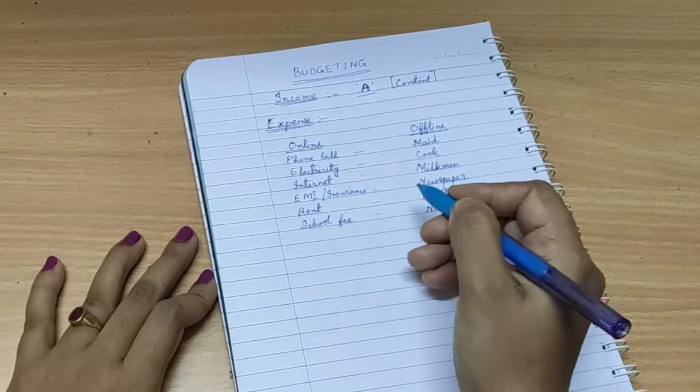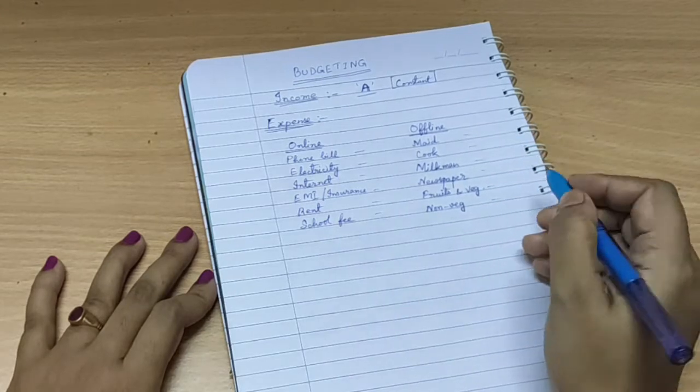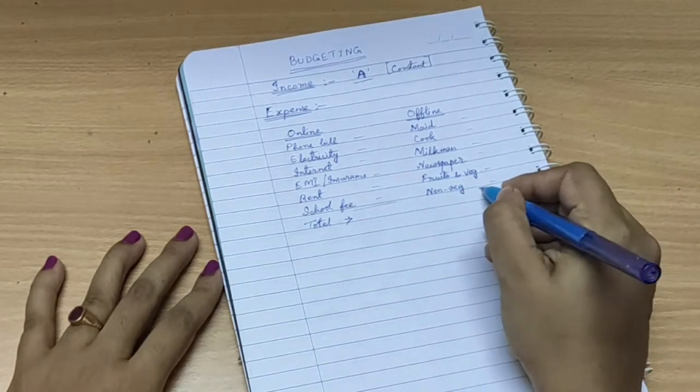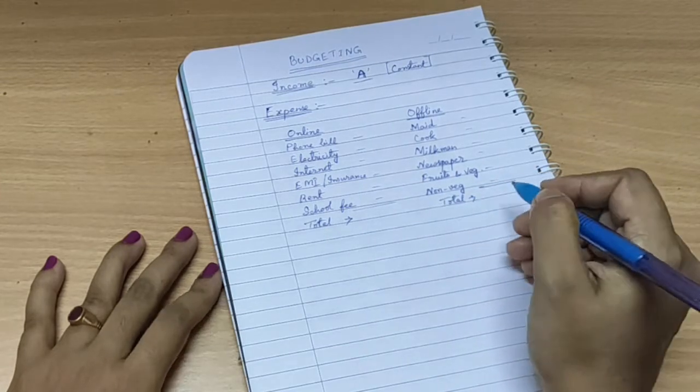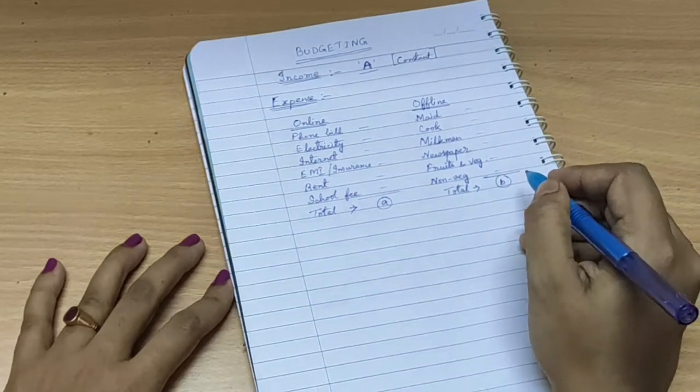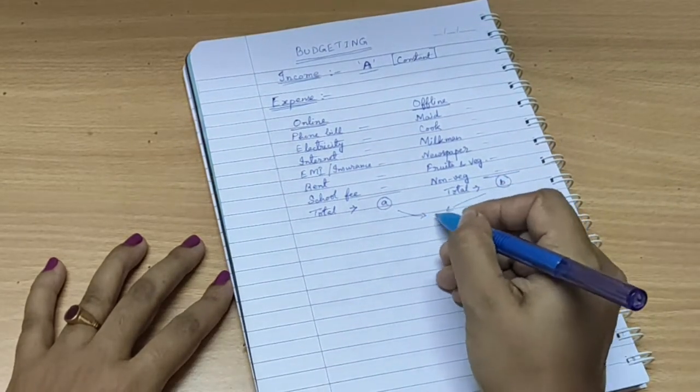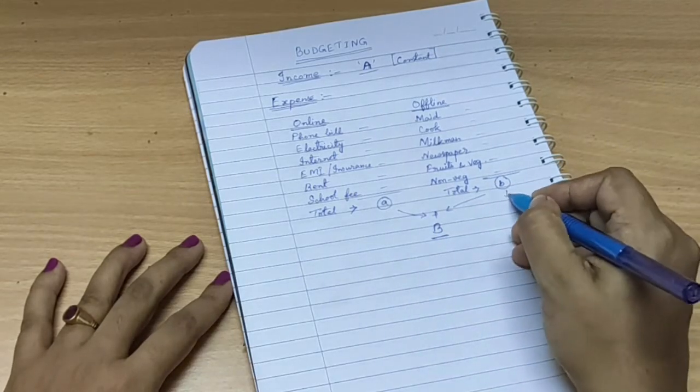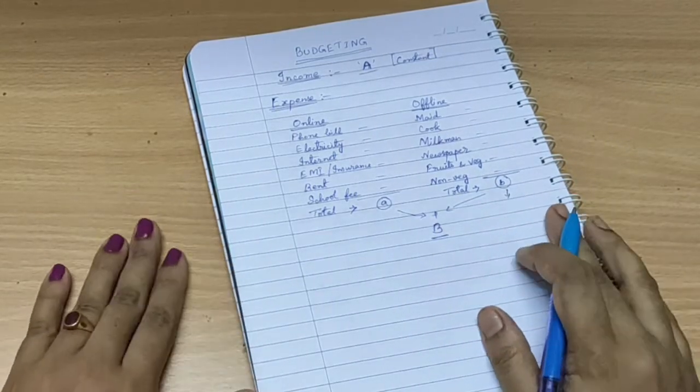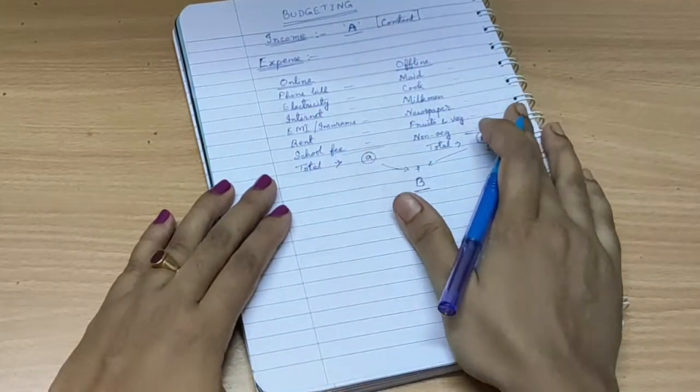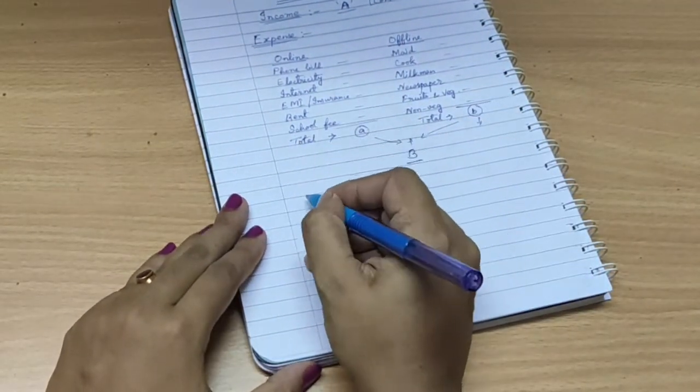Then put the amount against all of the expenses you have written here and find your total online expenses and total offline expenses separately. And then add them and you will get your total monthly expense. Now just withdraw the amount of cash at the beginning of the month which is your total offline expenses only.